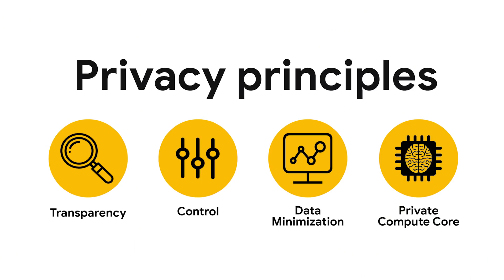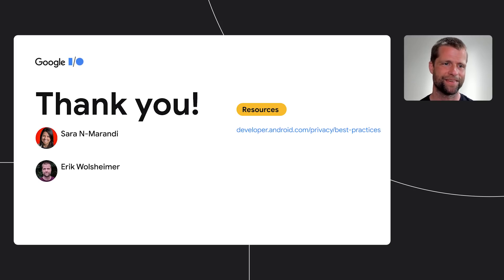Android 12 is our most ambitious privacy release to date. The team has been working hard to bring users features that add transparency to data access, empower greater control of private data, reduce access to data, and migrate more intelligence and smarts to privacy-preserving processes. We hope you found this session helpful. You can find a lot more details and documentation at the developer.android.com website. Thank you, everyone. Stay safe and healthy.